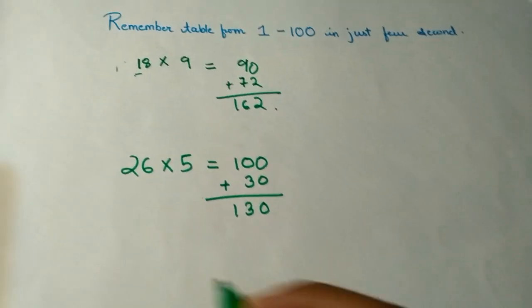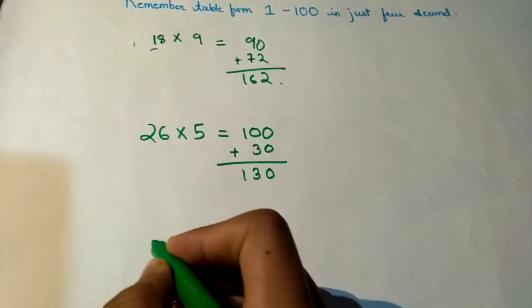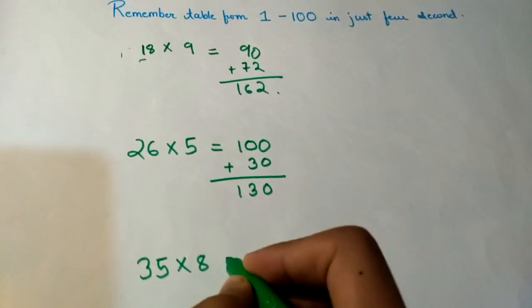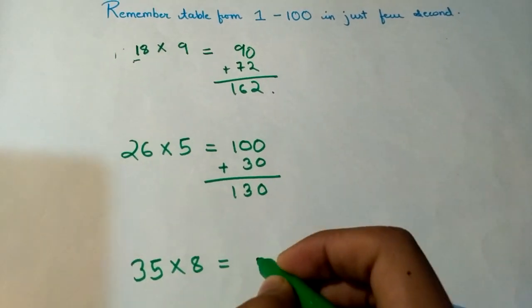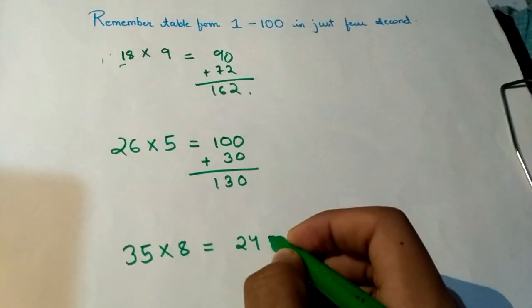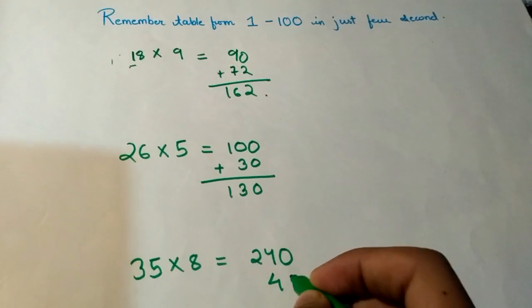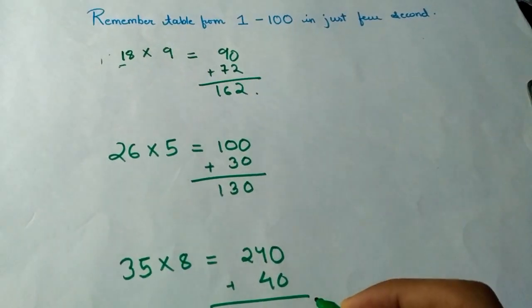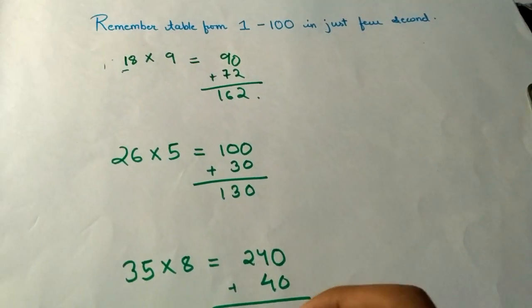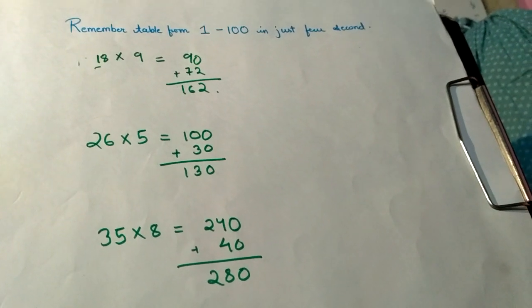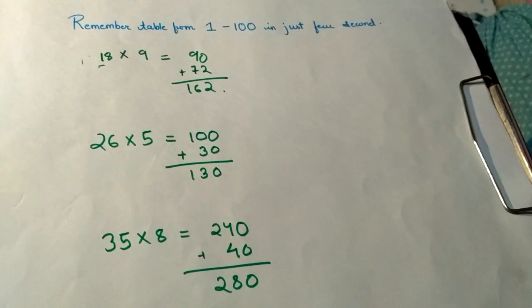Let's move to another example. We can take 35 × 8. That is 8 × 3 = 24, I will add another zero here. Now 5 × 8 = 40, I will add 40 here. So 240 + 40 = 280.